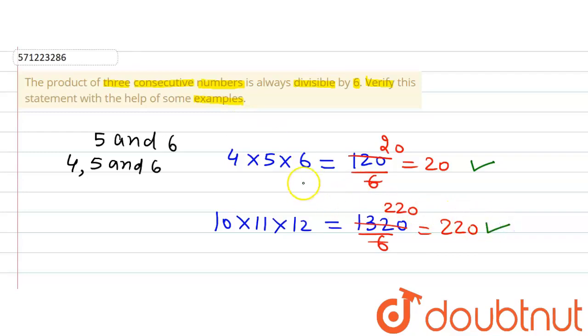So this also verifies the given statement. Both examples verify the statement that the product of three consecutive numbers is always divisible by six. Thank you.